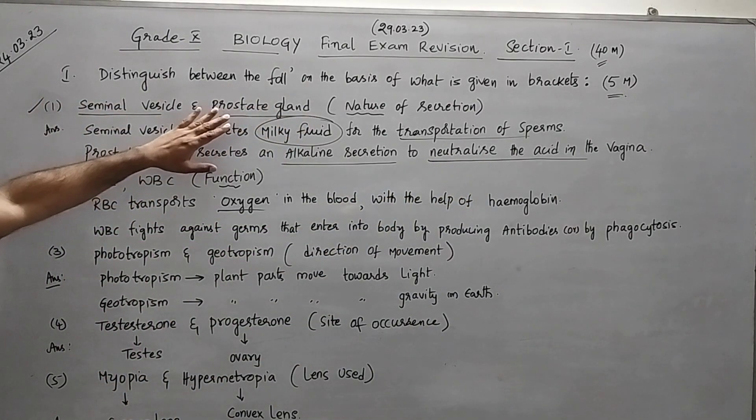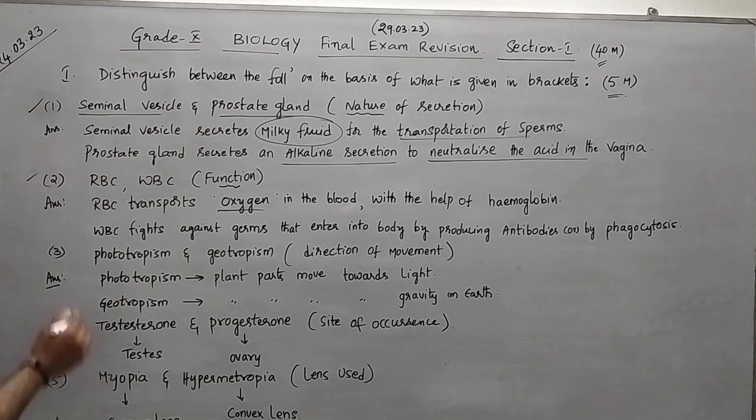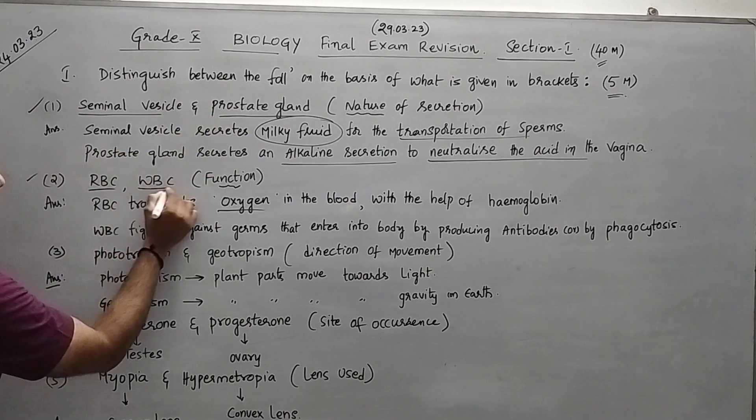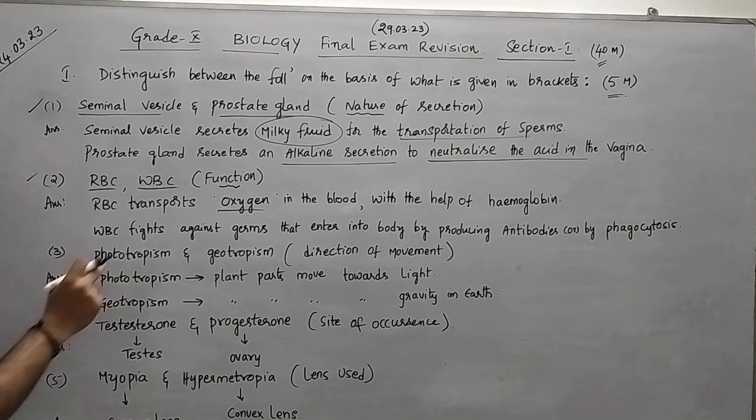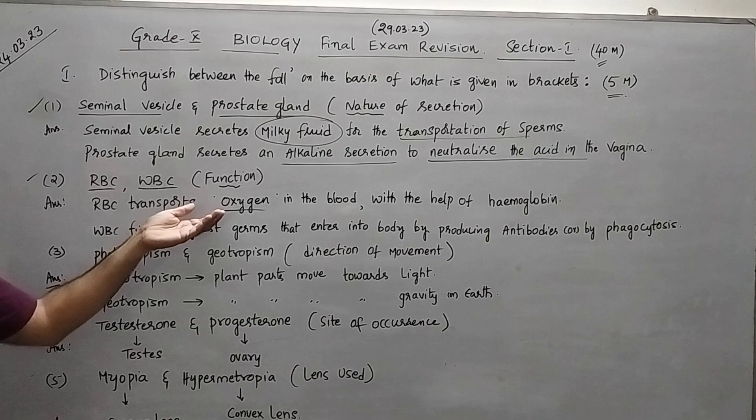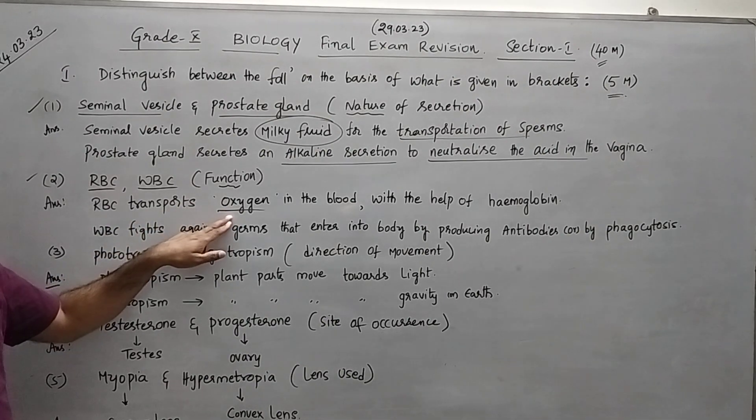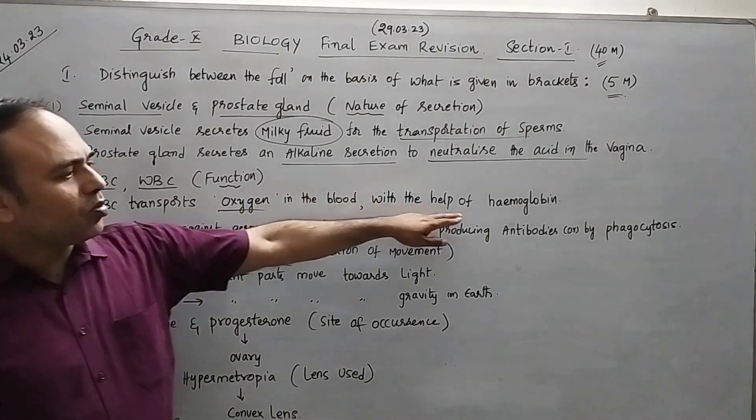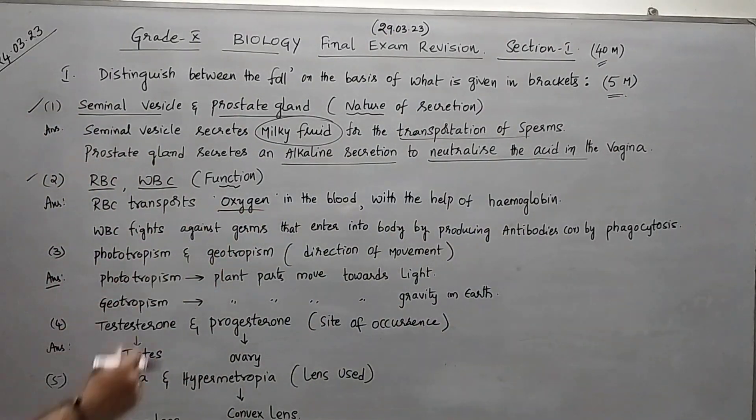Second one is RBC, red blood corpuscles, and WBC, white blood corpuscles - what is the function? RBC will transport the respiratory gases, that is oxygen in the blood, with the help of hemoglobin. You know that, oxyhemoglobin.